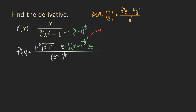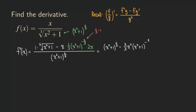So we are getting x squared plus 1 to the 1 over 3. Then we can start cleaning up the expressions: 2 times 1 over 3 is 2 thirds. There was an x here and another x, so multiplied together we get x squared. And then we have x squared plus 1 raised to the negative 2 over 3.